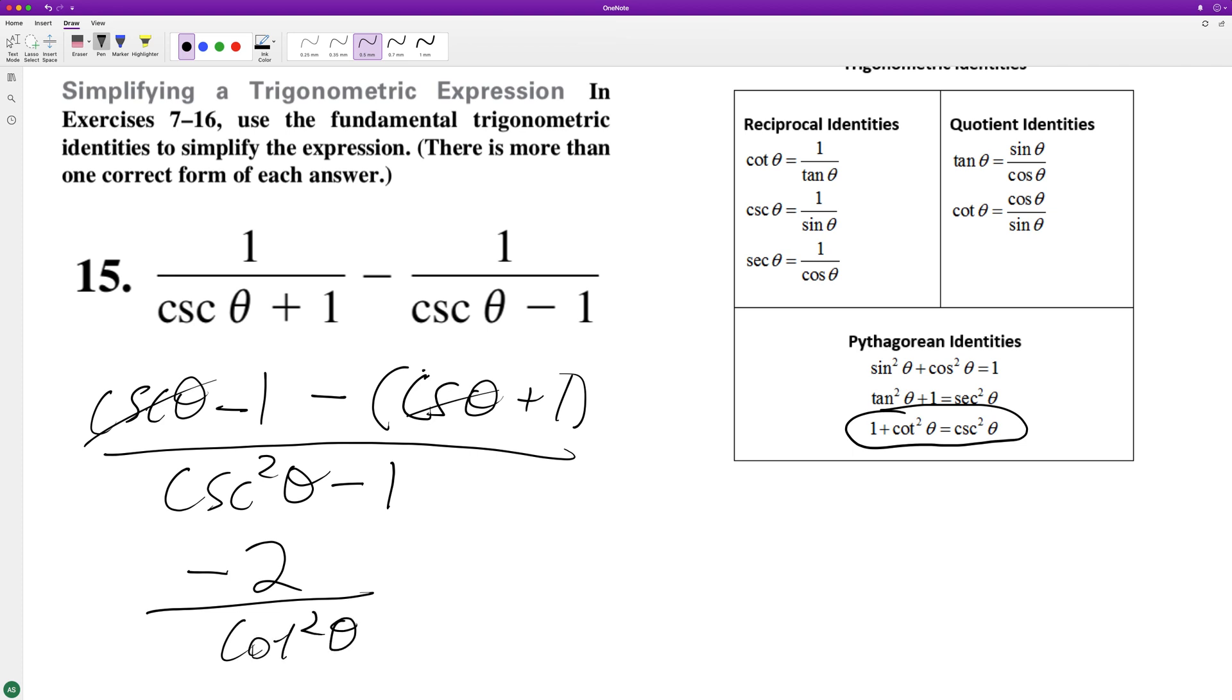Then you can rewrite this—since cotangent's on the bottom, it's the same thing as negative two tangent squared theta, because it just reciprocates. Cotangent and tangent are just flips of each other.